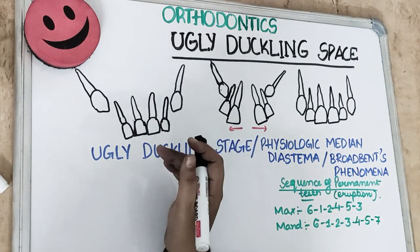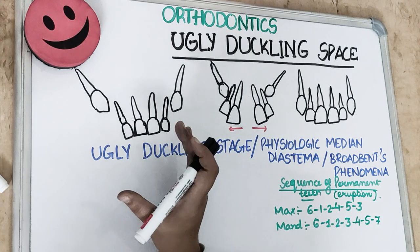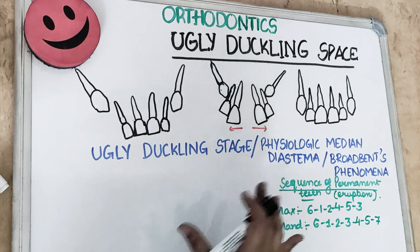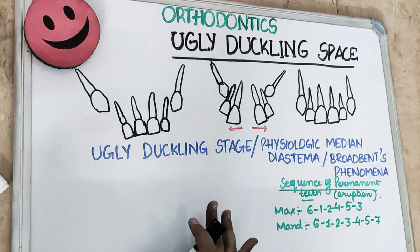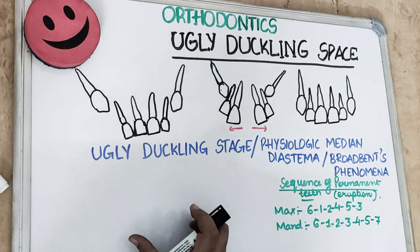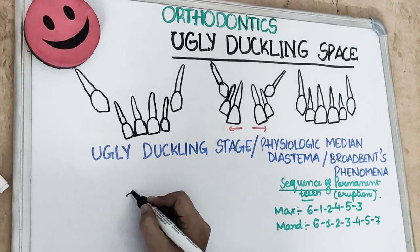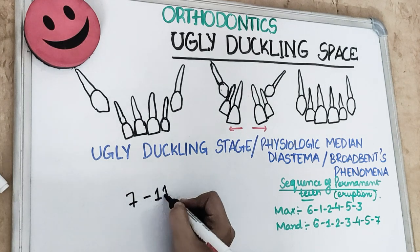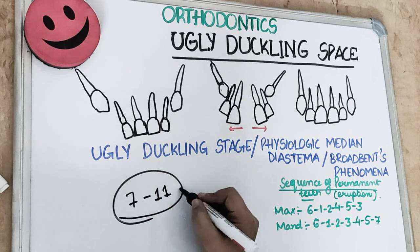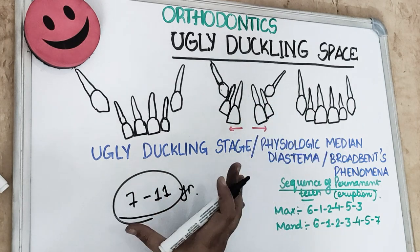It is known as the ugly duckling stage because children tend to look ugly during this phase. The ugly duckling stage is seen between 7 to 11 years, though in some books it is given as 8 to 9 years. It occurs between 7 to 11 years when the permanent canines are erupting.